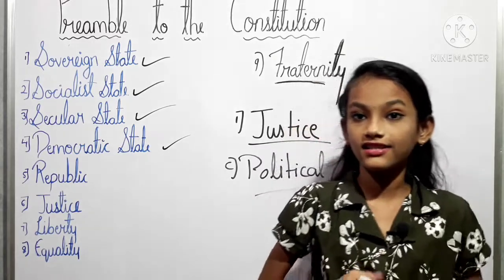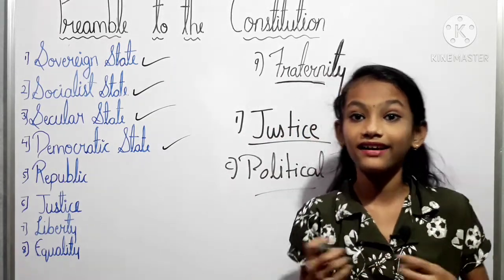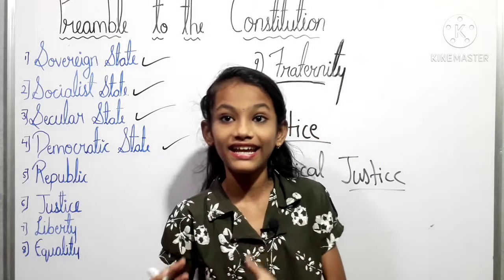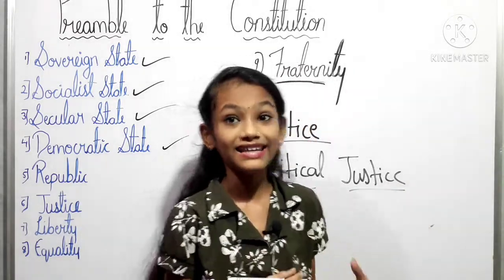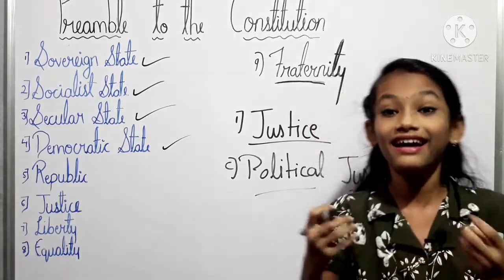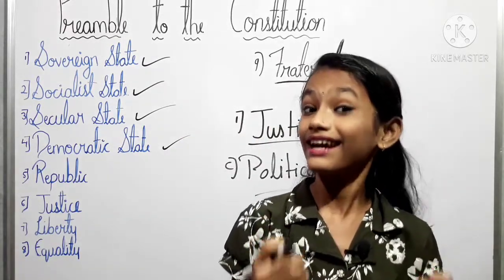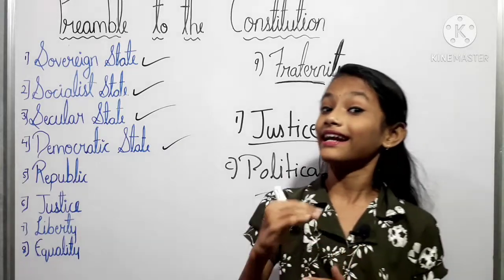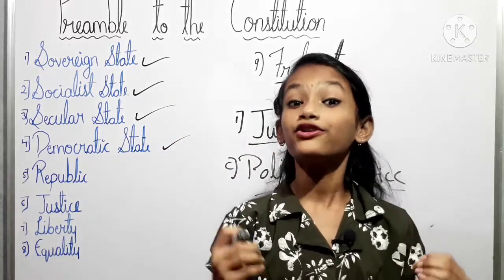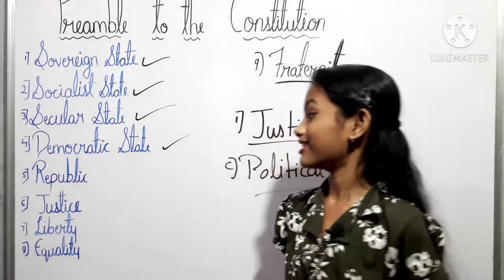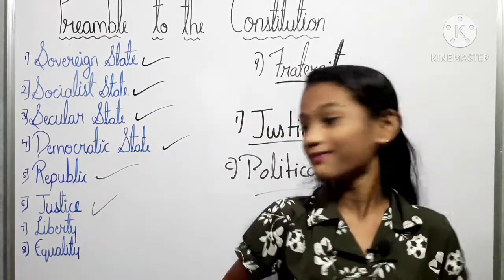Our third type is political justice. We have adopted universal adult franchise to enable equal participation in the running of the country. Accordingly, all citizens completing 18 years of age have the right to vote in elections. Our point on justice is now completed.